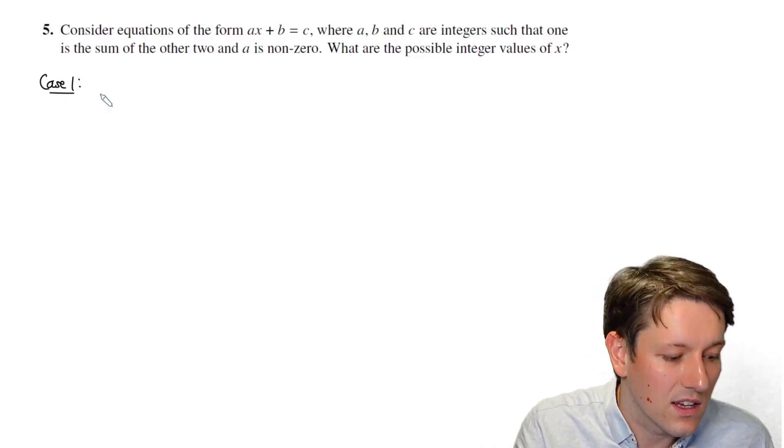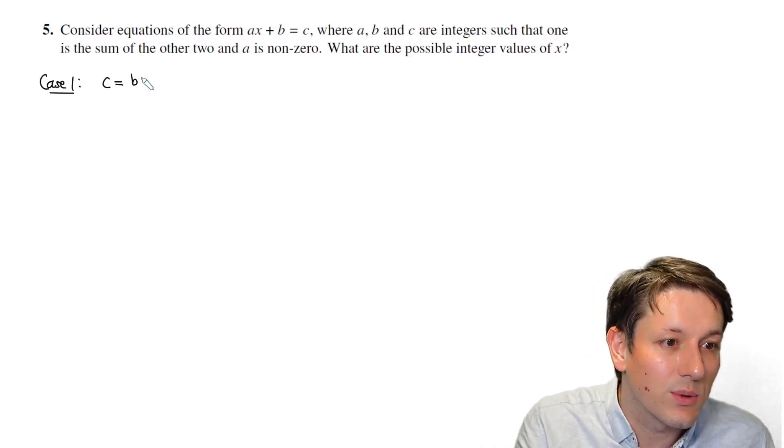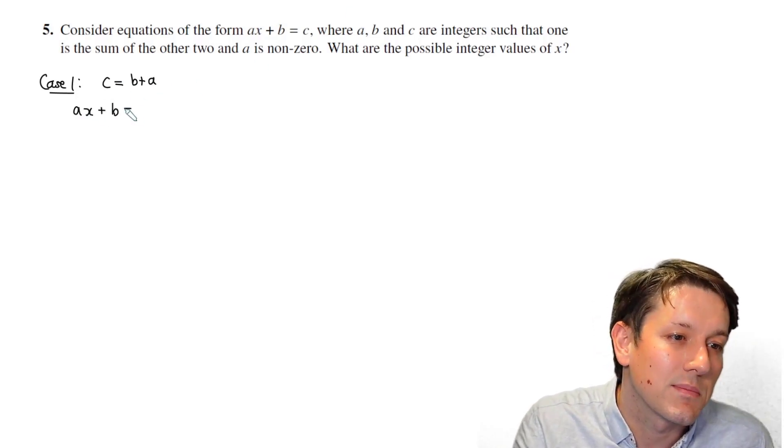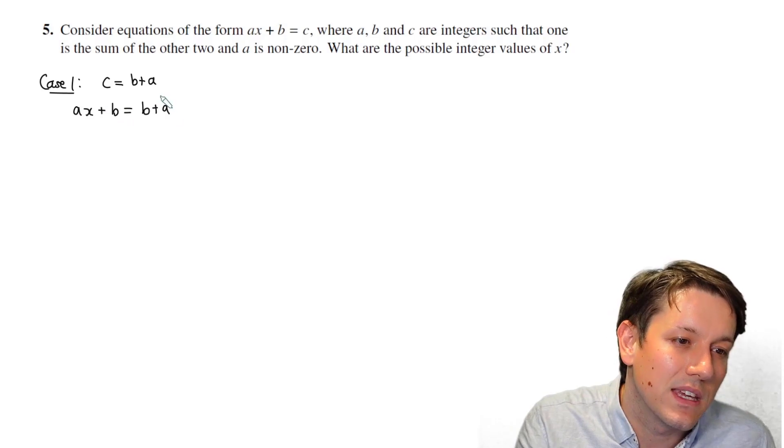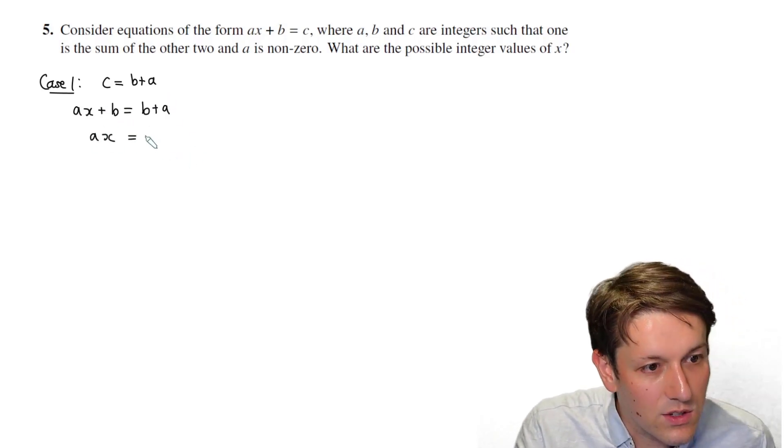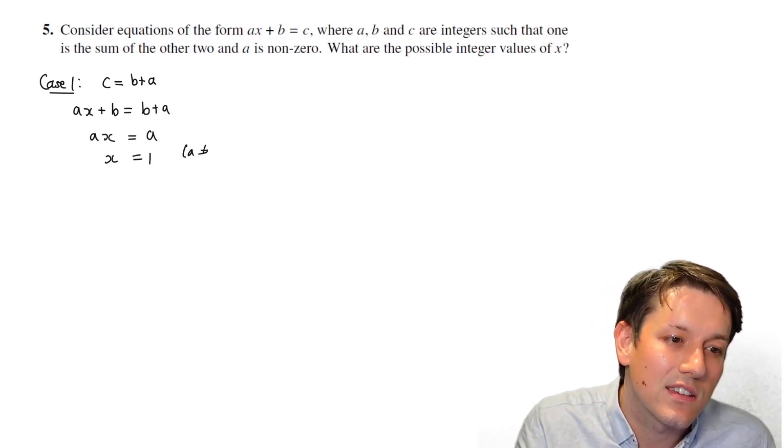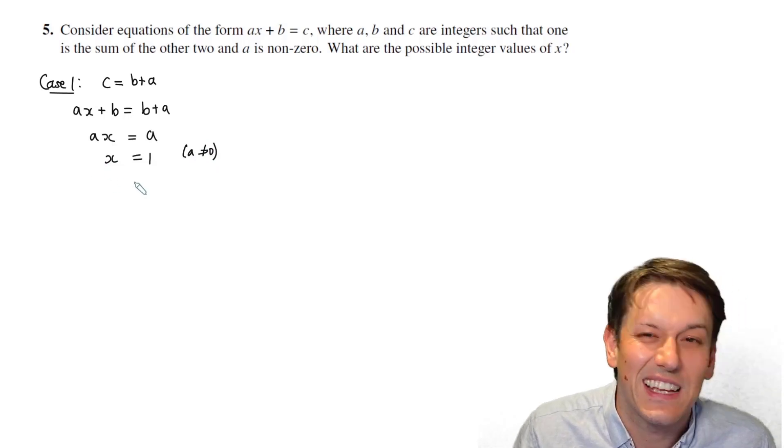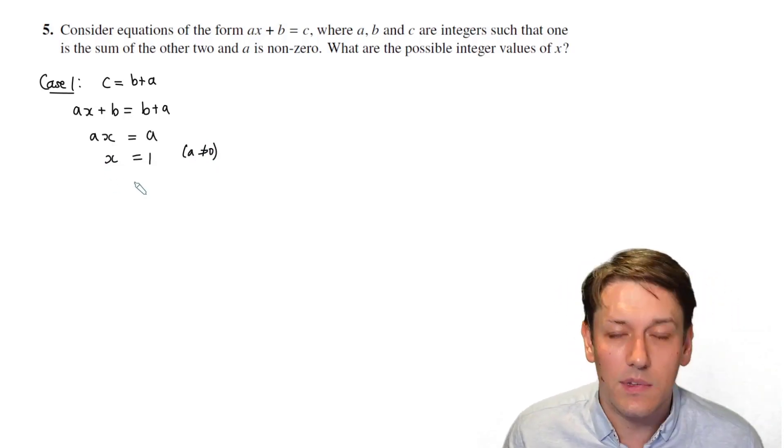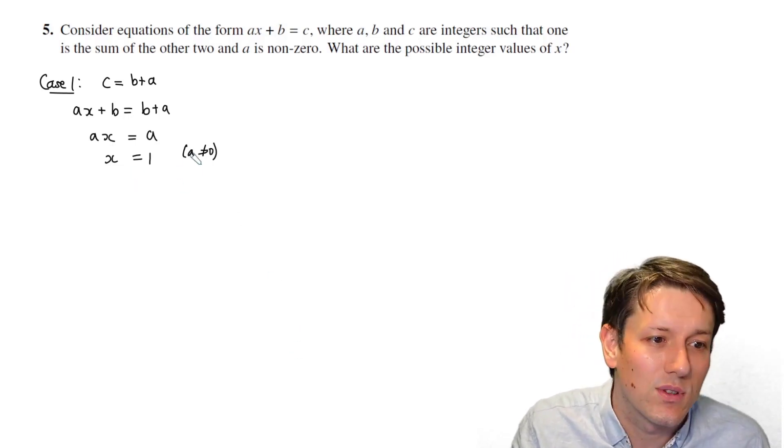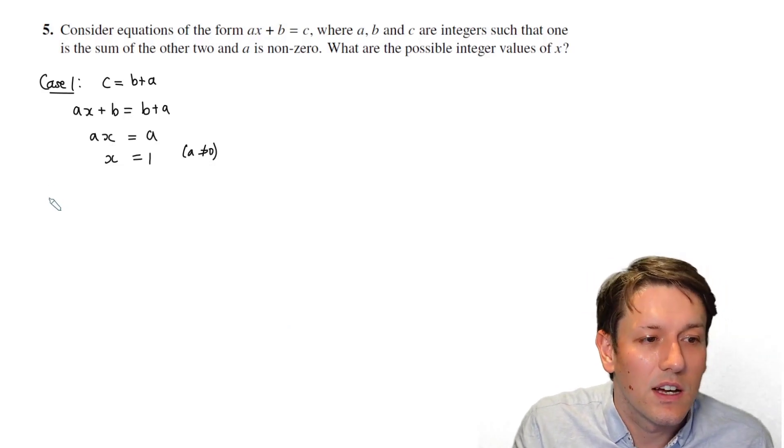In the first case, we could have c equals b plus a. If I just substitute that in, I get ax plus b equals b plus a, so ax is going to just be equal to a. I can divide through by a, because a is not equal to zero, and get that x equals one. So that is an integer solution, we found a possibility.